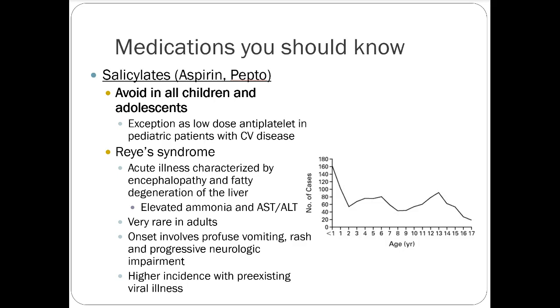Salicylates — aspirin, Pepto-Bismol, or anything with a salicylate moiety — are recommended to avoid in all children and adolescents, with an exception for low-dose antiplatelet therapy in pediatrics with cardiovascular disease. The concern is Reye's syndrome: an acute illness characterized by encephalopathy and fatty degeneration of the liver, with elevated liver tests like ammonia and AST/ALT. It's super rare in adults but much more prevalent in children and adolescents and seems to be linked to aspirin use in the context of a pre-existing viral illness.